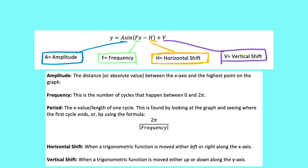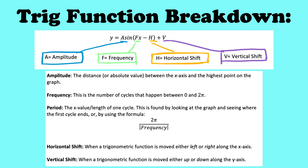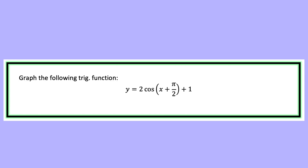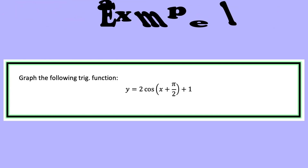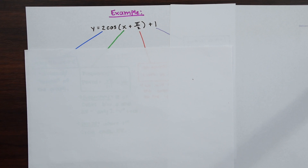Here's a summary of everything we just went over — it shows all the definitions of amplitude, frequency, period, and horizontal and vertical phase shifts. Now for our example: we want to graph y equals 2 cosine of x plus π over 2, plus 1. There's a lot going on here, but we're going to break down each transformation and do this one step at a time.